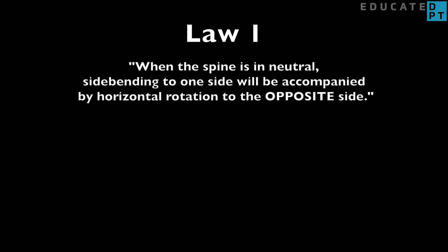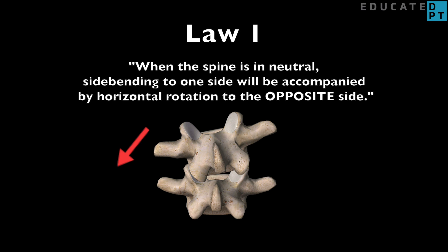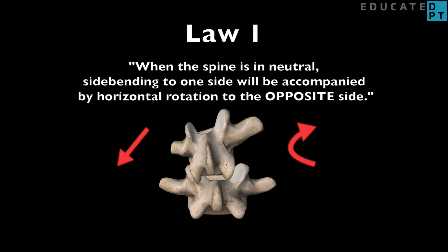Law 1. When the spine is in neutral, side bending to one side will be accompanied by horizontal rotation to the opposite side. So what this means is when your spine is aligned and you side bend to the left, for example, it will simultaneously be rotating to the right, the opposite side. These are known as coupled motions.